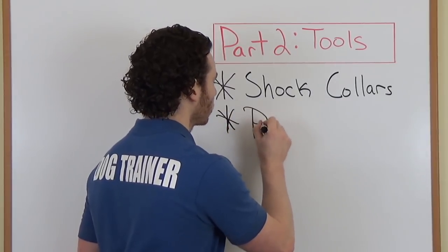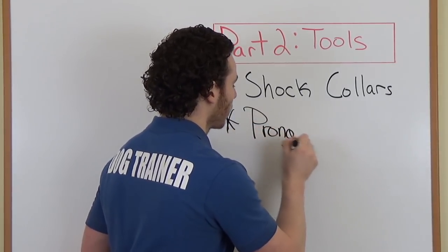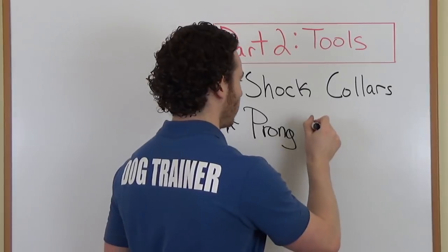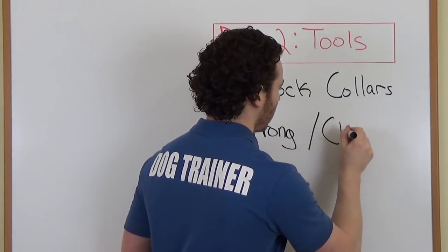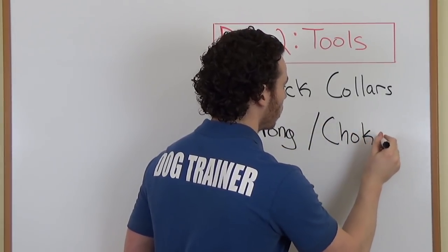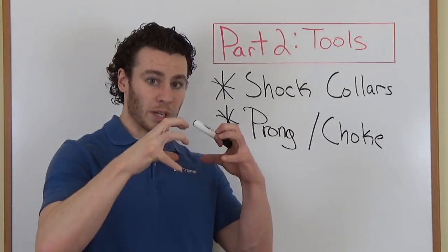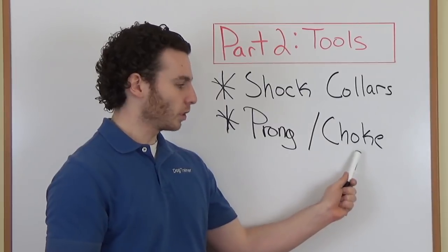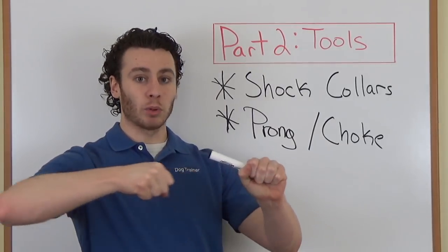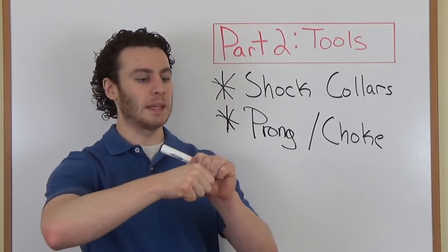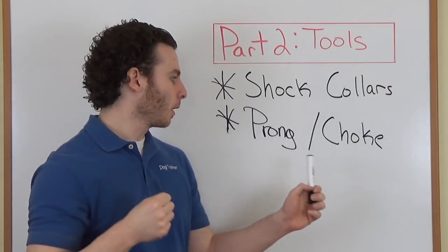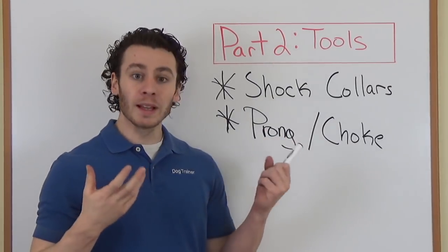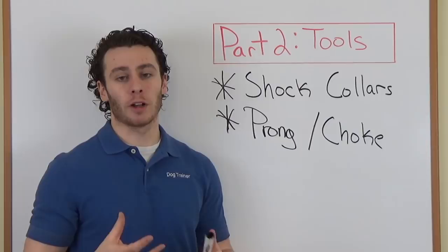Very similar to shock collars are prong collars or choke chains. The prong collars are the big metal ones with the big prongs that go into the dog's neck. The choke chains are just the regular chains. These are super dangerous because if the dog keeps pulling, there's no stop. It'll just keep getting tighter and tighter. Prong collars, both of these things are forms of positive punishment.